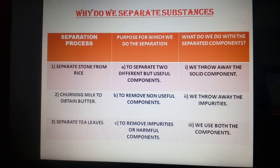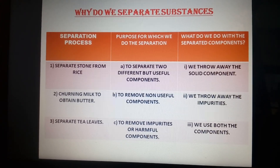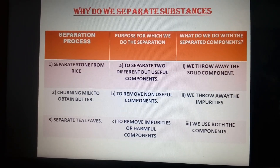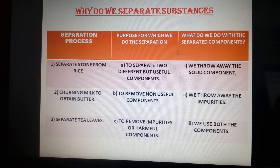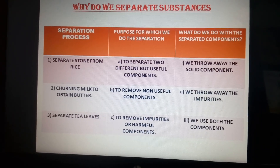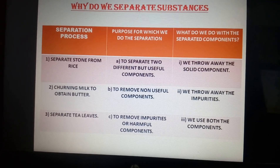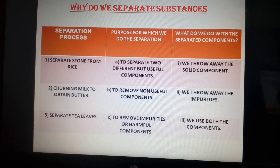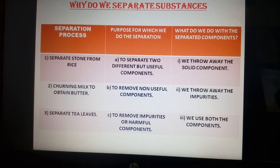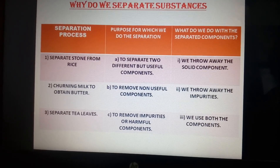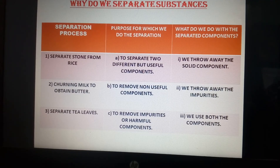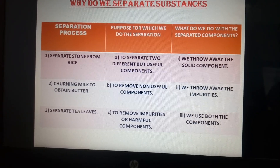In this table, you will know why we separate substances. For example, number 1 is to separate stones from rice, which is a very common practice. You have seen that your mother, before making rice, generally takes the rice in a container and if there are any impurities — pebbles or stones — she picks them out. The purpose is to separate two different but useful components.